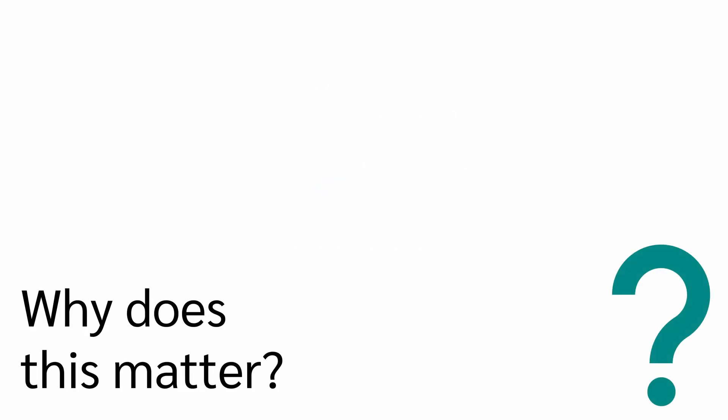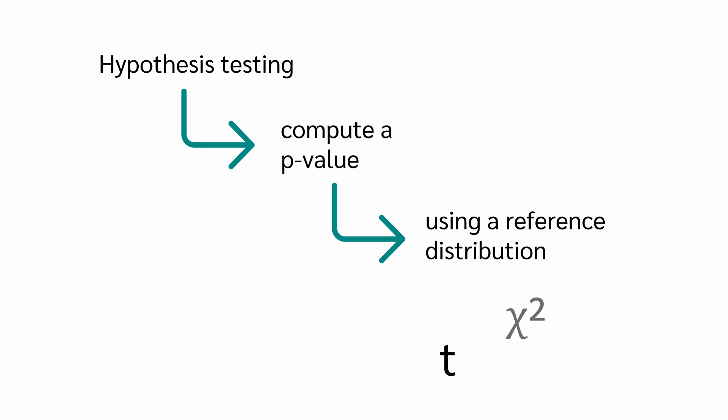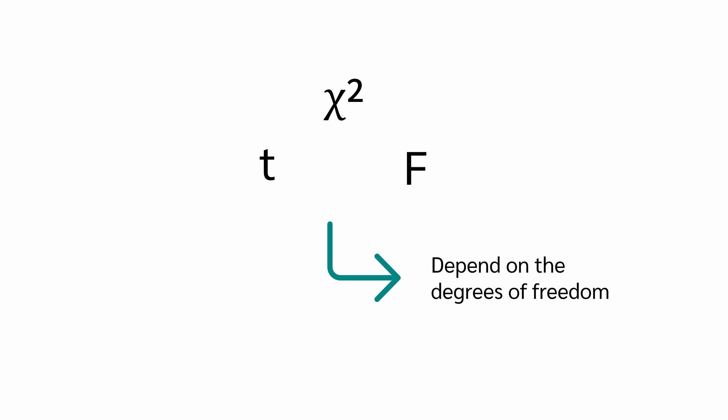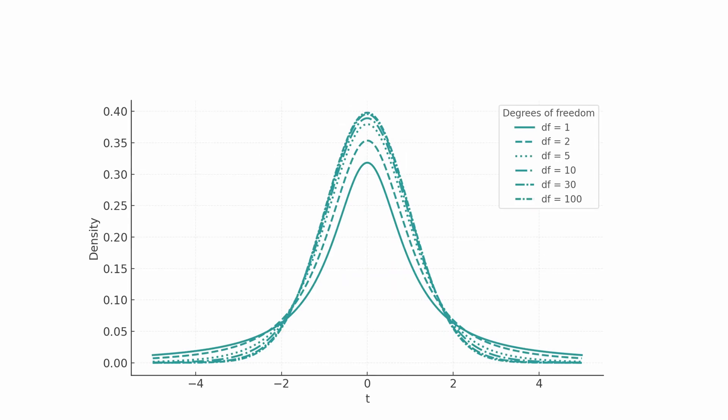But why exactly do we need degrees of freedom? In hypothesis testing, we compute a p-value using a reference distribution such as the t-distribution, chi-square distribution or f-distribution. And these distributions depend on the degrees of freedom.